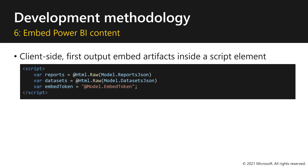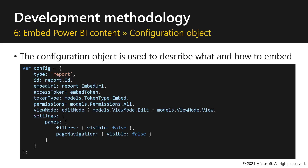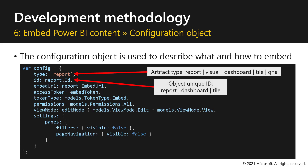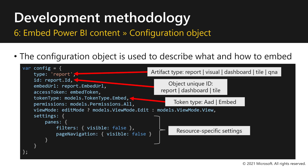On the client side, you will need to output embed artifacts inside a script element. The configuration object is used to describe what and how to embed. In this example, we're embedding a report. The artifact type could also be a visual, a dashboard, a tile, or Q&A. The ID will be the unique ID of your embedded content. The token type can either be embed or AAD when embedding for your organization. Lastly, you can set resource-specific settings — for example, hiding the filters and page navigation panes.